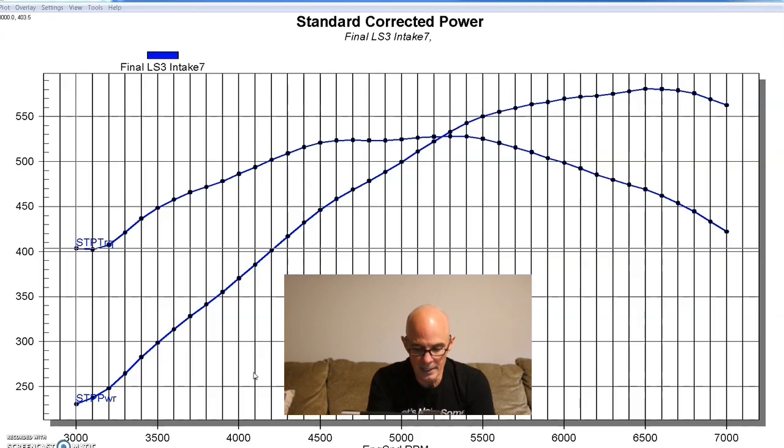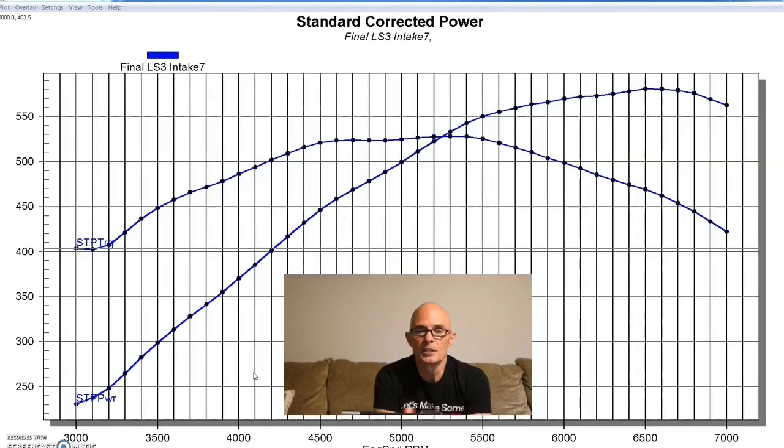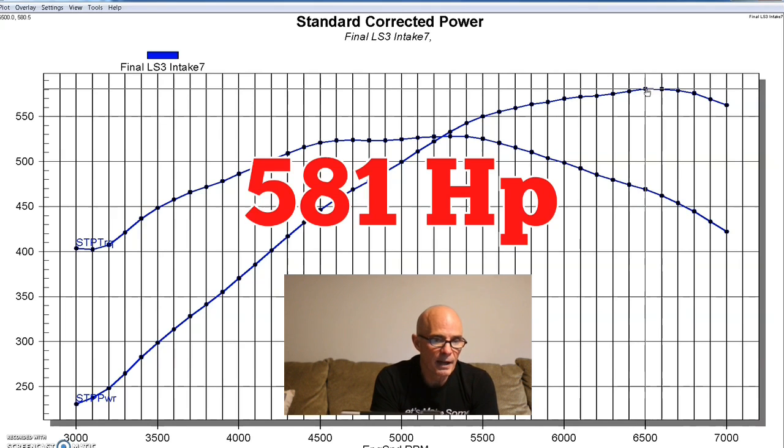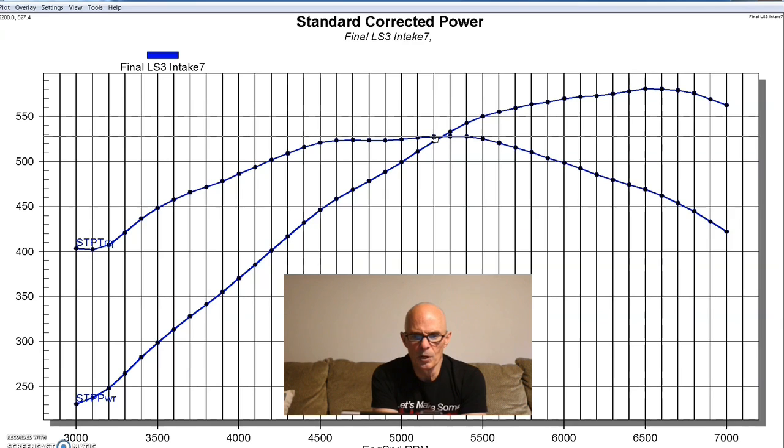We put it all back together and ran it, and with that cam and inch and seven eighths hooker headers, we used the Holley HP management system to dial all this stuff in to make sure we maximize the power output of each combination. Equipped with a factory LS3 intake and a 92 millimeter throttle body, our LS3 crate motor produced 581 horsepower and 527 foot-pounds of torque. So it did pretty well. This is a good combination. These LS3 motors have got plenty of head flow, stick a cam in them, they look pretty good.